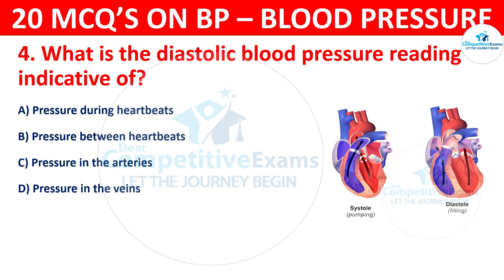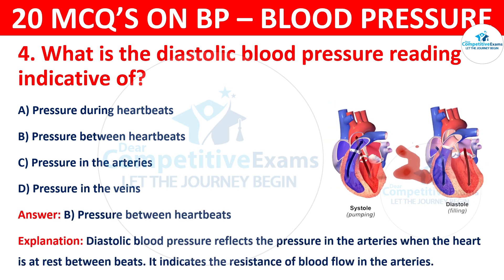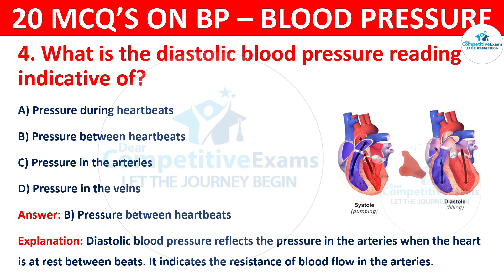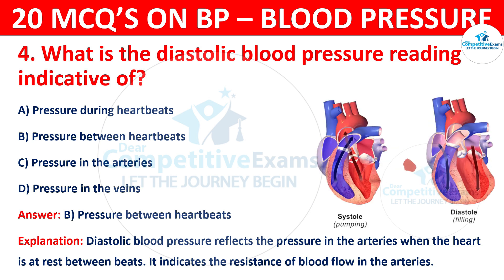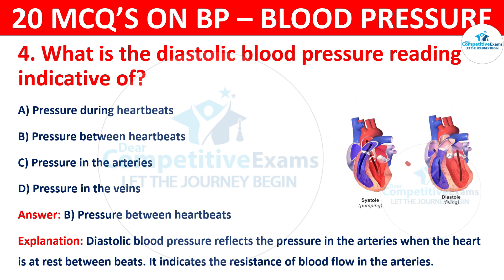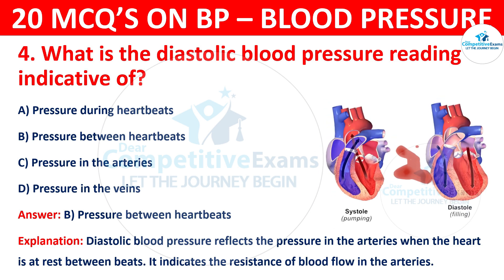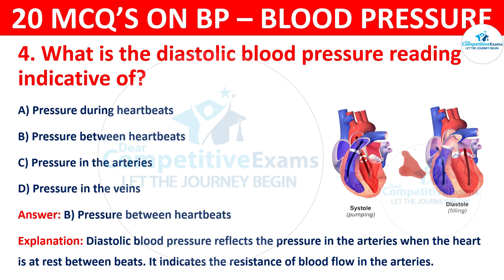The correct answer is B, Pressure between heartbeats. The diastolic blood pressure reflects the pressure in the arteries when the heart is at rest between beats. It indicates the resistance of blood flow in the arteries.